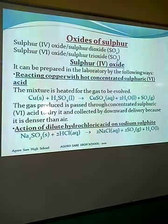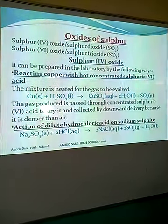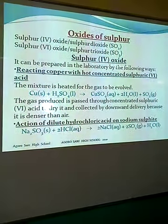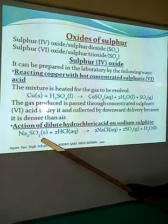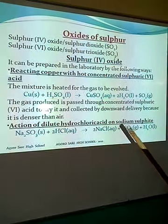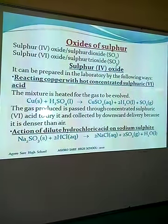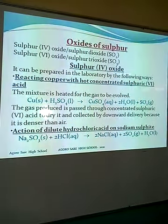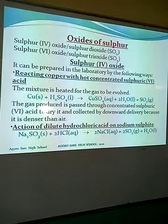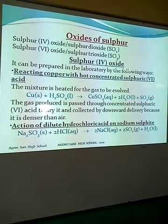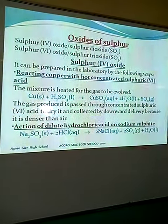We are going to look at them and their uses. Now, sulfur dioxide (SO₂) — how it is prepared in the laboratory. There are several ways of preparing it in the laboratory. One main way is the action of dilute hydrochloric acid on sodium sulfite. Any sulfite can react with an acid, particularly hydrochloric acid, to form sodium chloride, sulfur dioxide, and water. We also have the action of copper on hot concentrated sulfuric acid to form copper(II) sulfate, water, and sulfur dioxide.